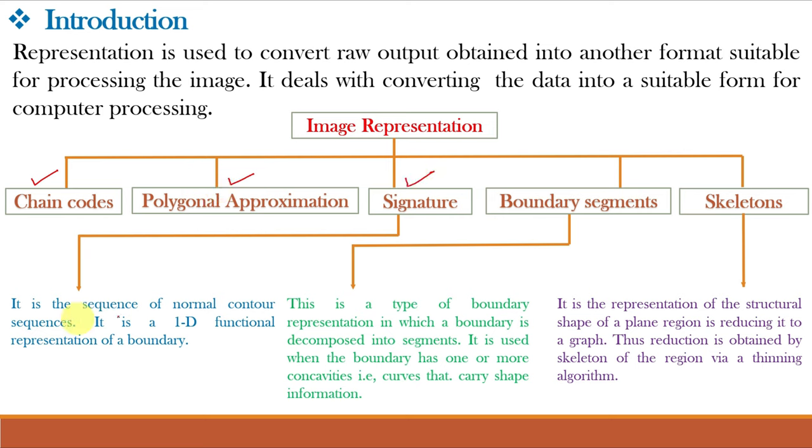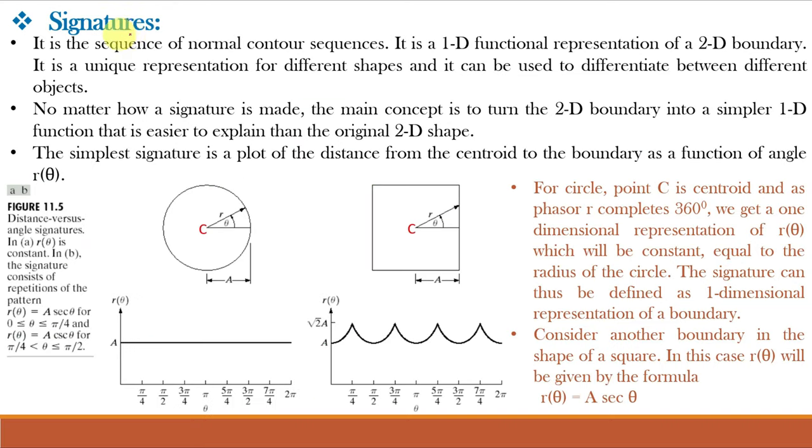In this video class, we will be learning signature which is the sequence of normal contour sequences. It is a one-dimensional functional representation of a boundary. Signature is the sequence of normal contour sequences. It is a one-dimensional functional representation of a two-dimensional boundary. Why we convert the two-dimensional boundary into one-dimensional boundary? So that it is simpler for computation. It is a unique representation for different shapes and it can be used to differentiate between different objects. See every signature will be unique for every different shape.